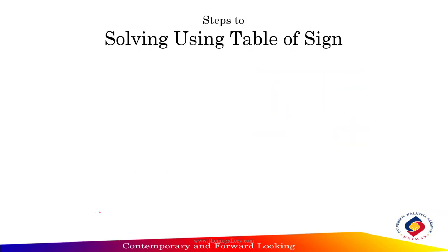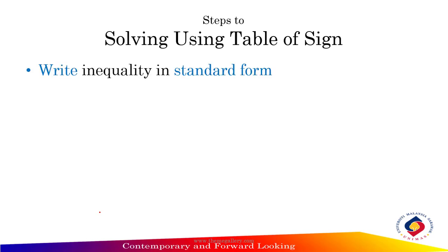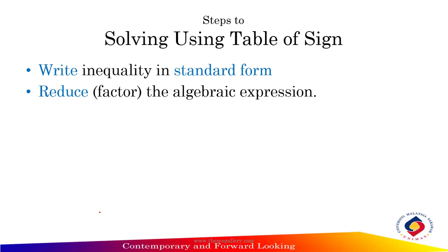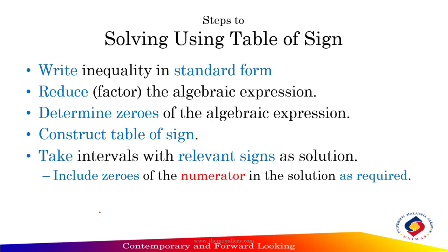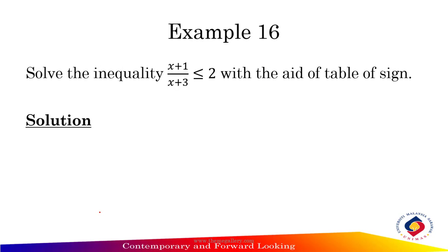Solving using table of sign. Steps: First, write the inequality in standard form. Second, reduce and factor the algebraic expression. Third, determine the zeros of the algebraic expression. Fourth, construct the table of sign. Fifth, take the intervals with relevant signs. Sixth, include zeros of the numerator in the solution as required.